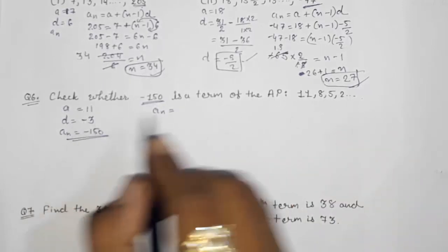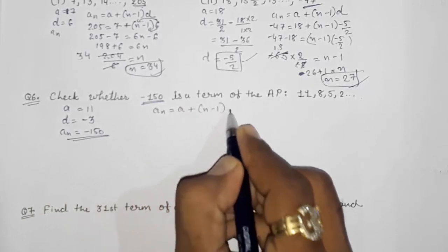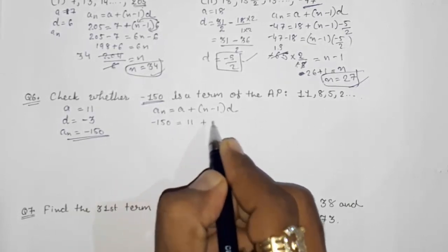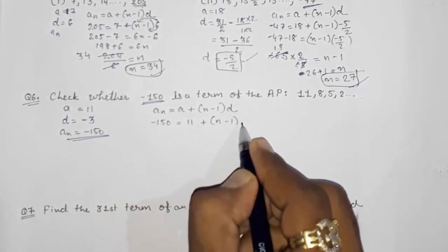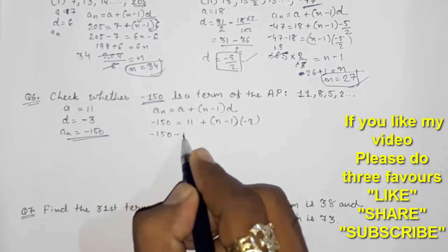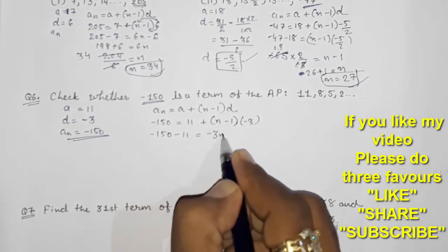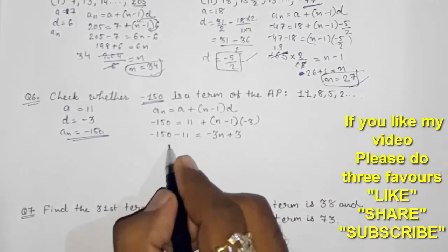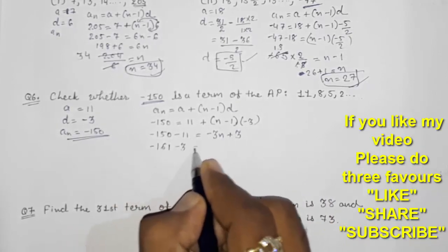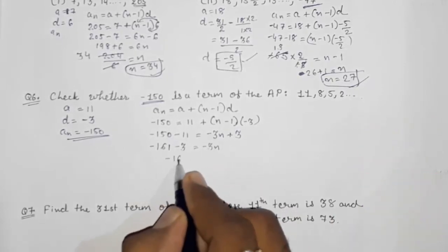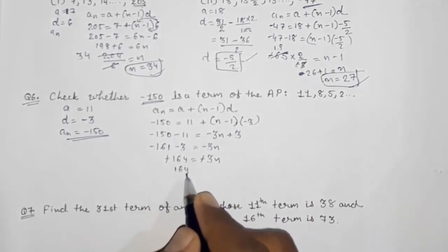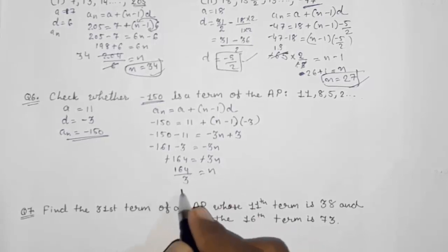Using the formula an = a + (n − 1) × d: −150 = 11 + (n − 1) × (−3). Taking 11 to the other side: −150 − 11 = −3n + 3, so −161 = −3n + 3, giving −161 − 3 = −3n, thus −164 = −3n. The minus signs cancel, so 164 ÷ 3 = n.